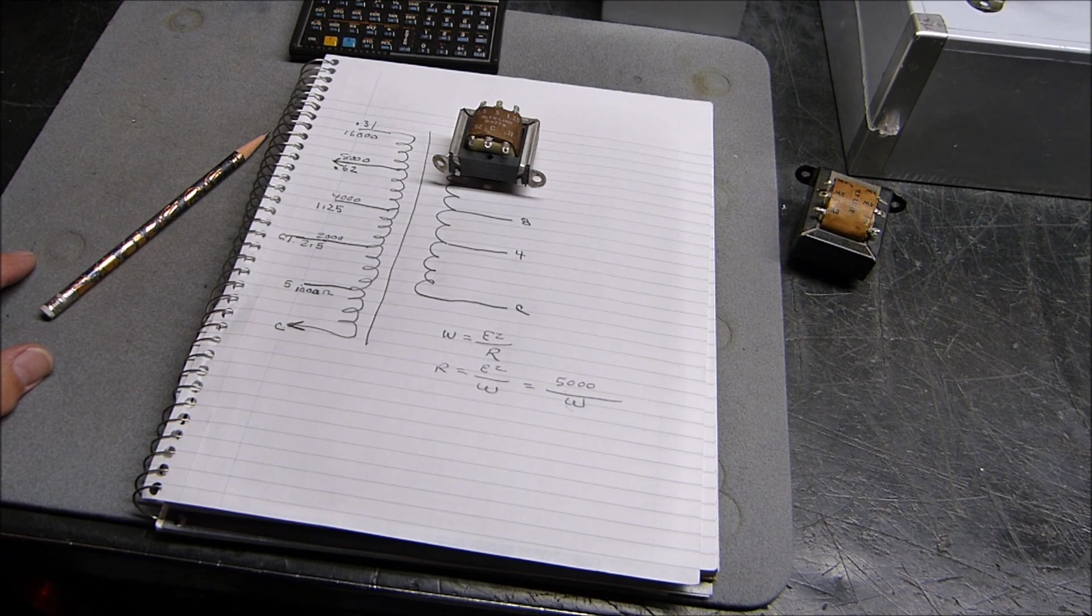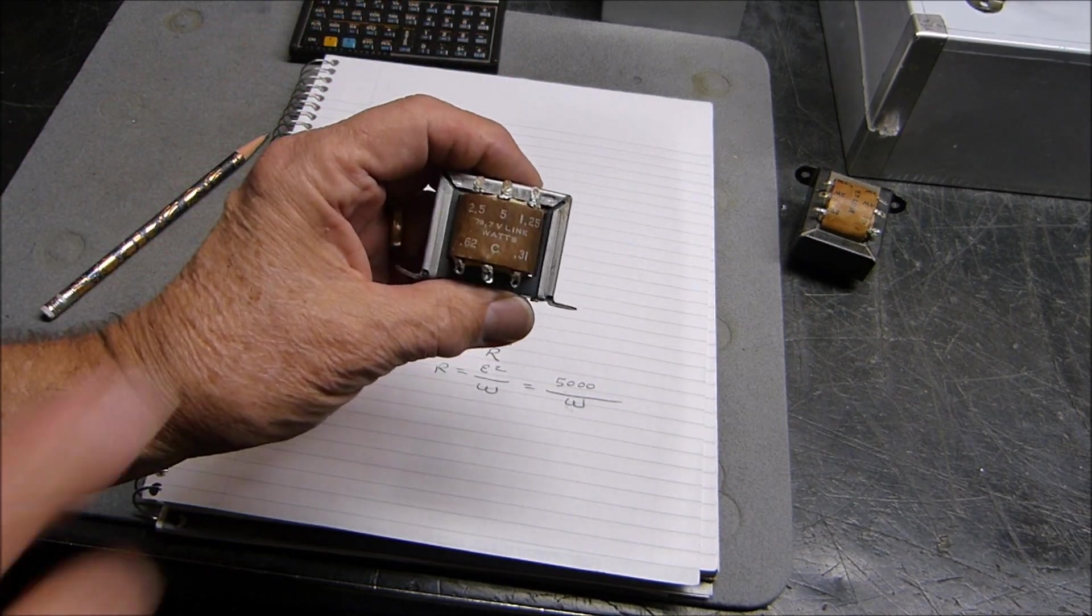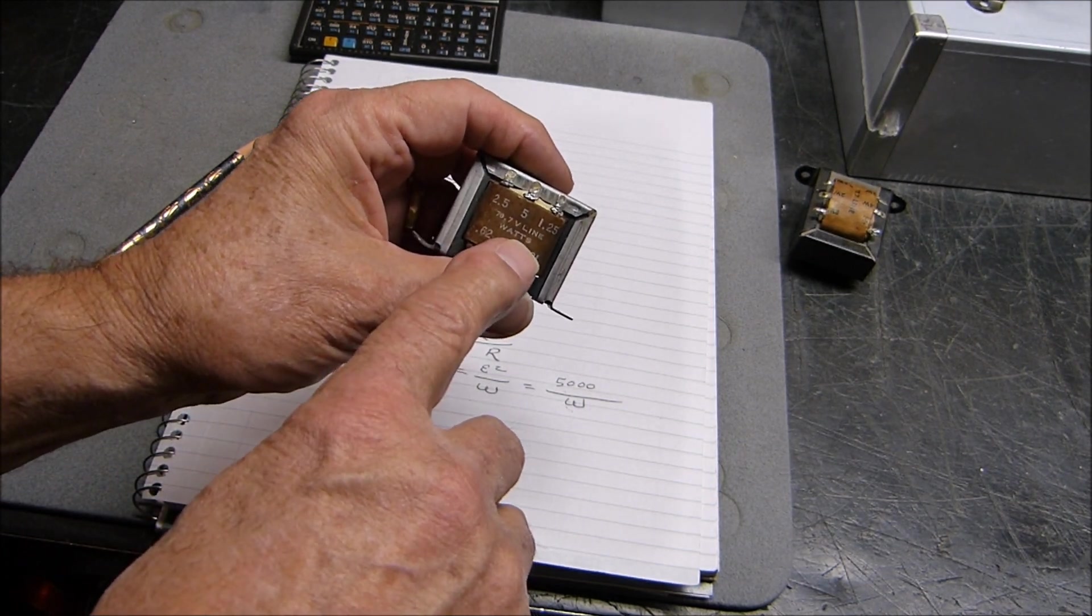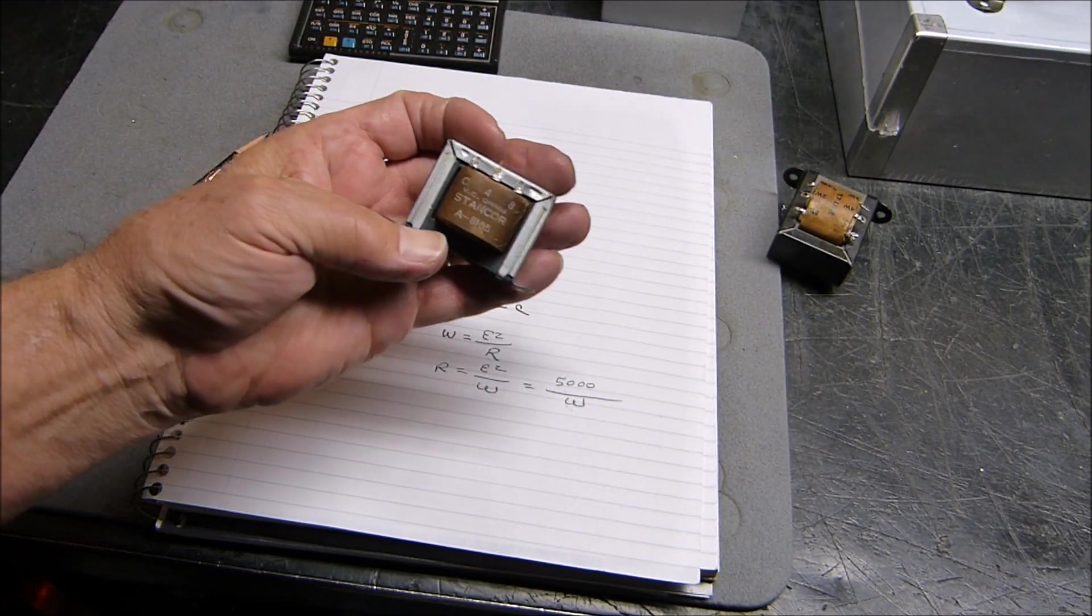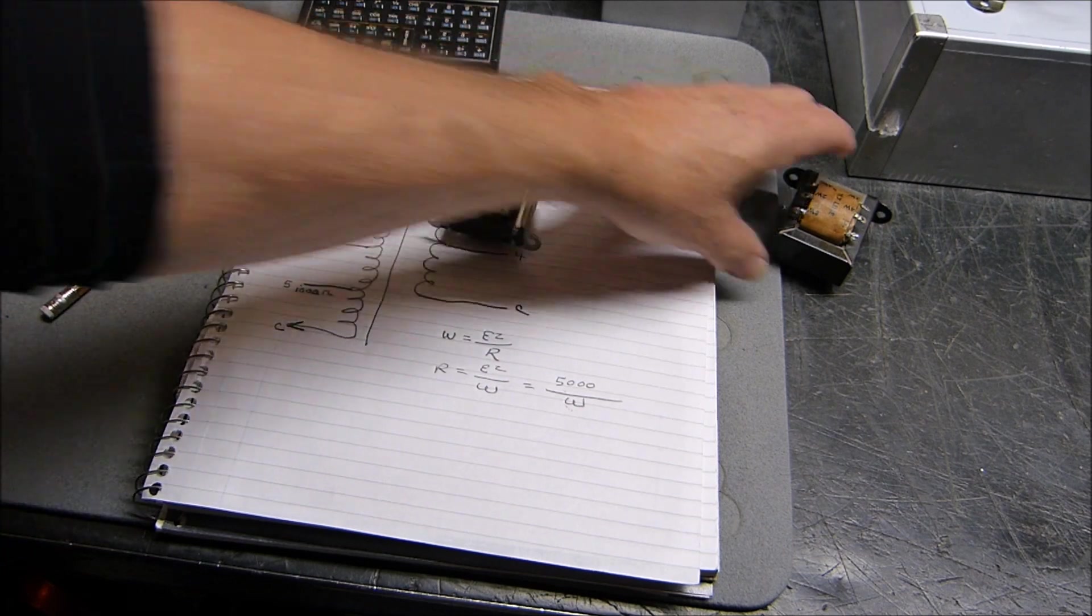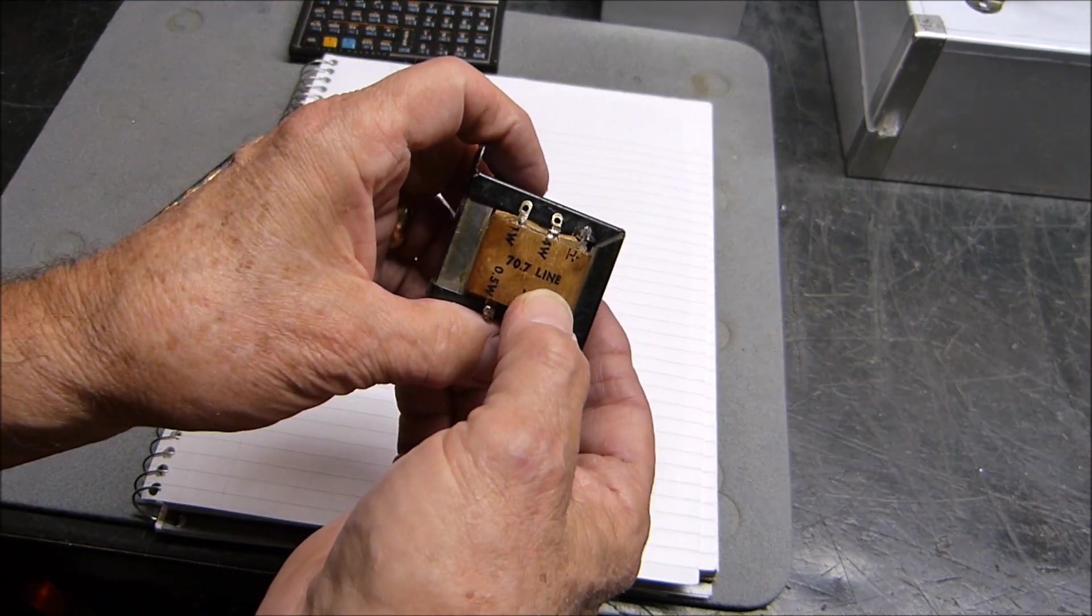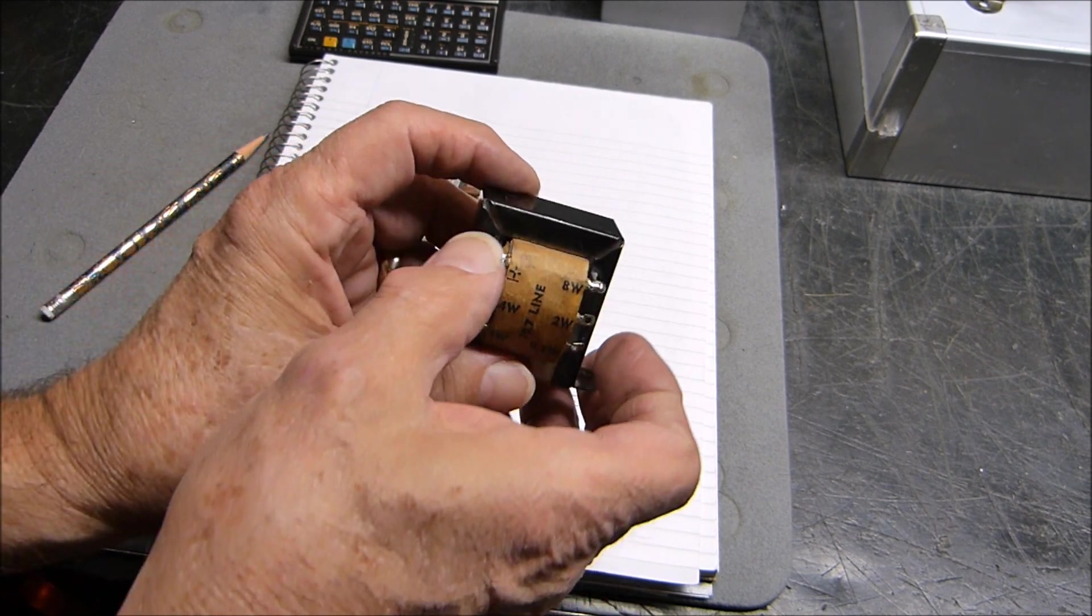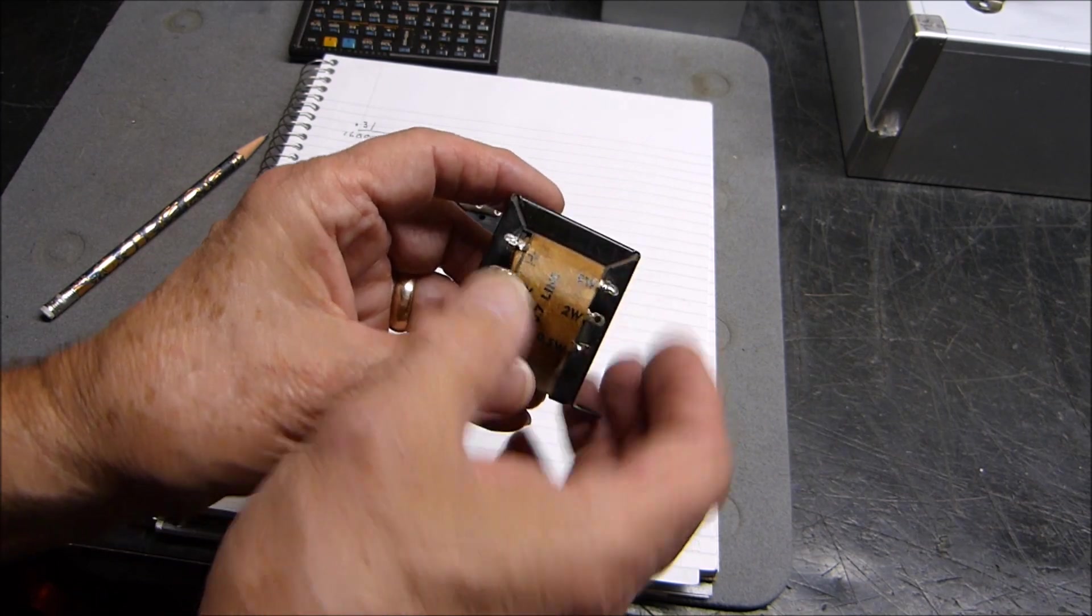These are little line transformers. See that 70.7 volt line and watts? Here's another pretty one. This one's made by Stancore, good USA transformer, probably decades old. Here's another one, 70.7 volt line. This one is rated at half watt, one watt, two, four, and eight watts.